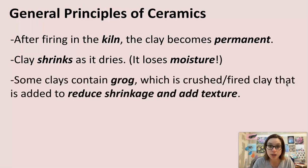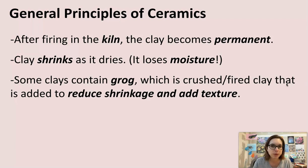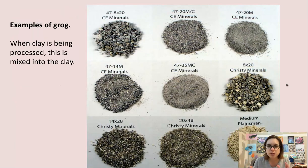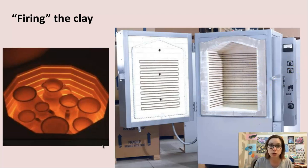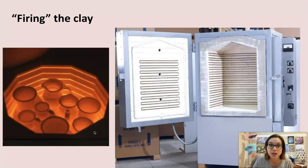Some clays contain grog, which is crushed or fired clay that is added to reduce shrinkage and add texture. The clay that we use has a little bit of grog in it. These are some pictures of different types of grog — when the clay is being processed, this grog becomes mixed in. So if you look at our clay and notice little speckles of sand, that's the grog. When we say firing clay, we mean we put the clay inside a kiln and fire it at a very, very high temperature. The work literally glows in the kiln because it's fired at such a high degree.